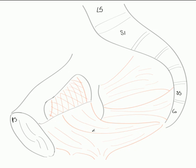Here we can see levator ani sweeping down to cover the pelvic outlet and uniting with the contralateral pelvic floor muscles. We can see a couple of defects: one for the urethra, one for the rectum, and if this was a female pelvis there would be another one in between for the vagina. Here we can see another pelvic floor muscle — not levator ani but coccygeus, coming from the inferior aspect of the coccyx and running towards the ischial spine.